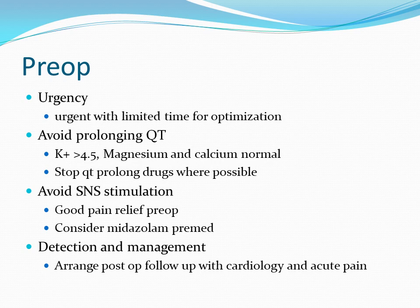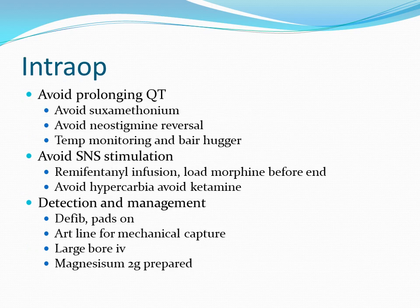Things to remember for long QTc are: avoiding things that prolong QT and promote Torsades, prevention of increased sympathetic nervous system stimulation which can cause Torsades, and detection and management of Torsades if it occurs. This is an urgent case with limited time for optimisation in a high-risk patient. Pre-operatively, I would avoid anything that prolongs QT by ensuring potassium is greater than 4.5 and magnesium and calcium are normal, stopping QT-prolonging drugs where possible, and ensuring good pain relief. I would give midazolam if the patient is anxious.